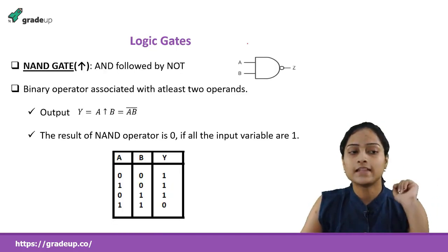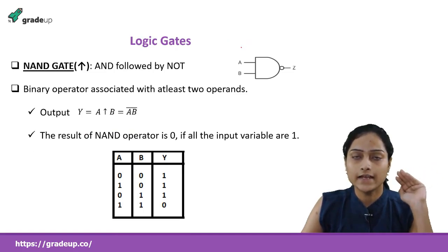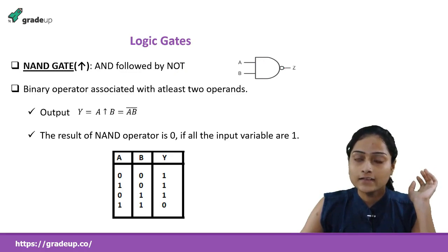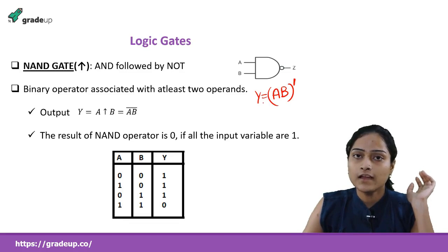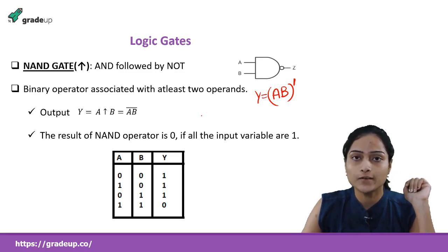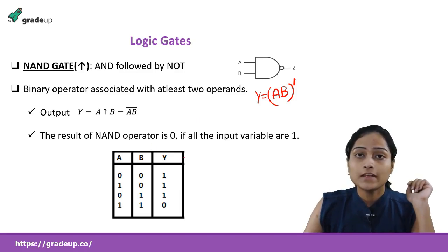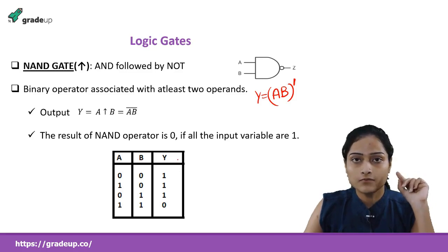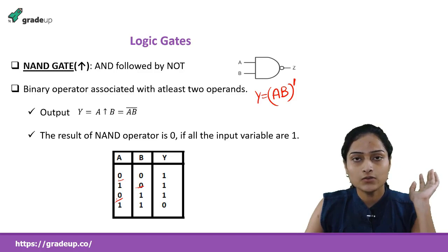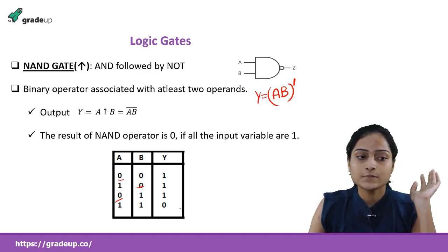The NAND gate is also a derived gate, represented by an upward arrow. It is derived by AND followed by NOT — apply the AND gate to get AB, then apply NOT to get the NAND output. It is also a binary operator. In AND gate we get 1 only when all inputs are 1, but in NAND gate you get output 1 if any one of the inputs is 0.